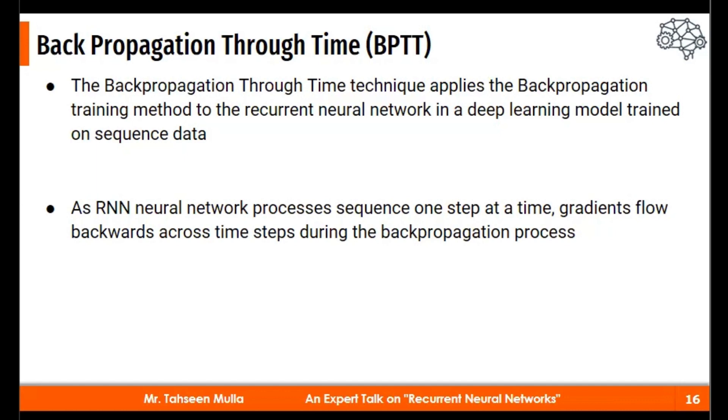The gradient at each input depends only on the calculations of the current step, not on the previous step. For example, if I want to calculate the gradient at time step t equal to four, I need to backpropagate three steps and sum up all those gradients and then calculate it for the current state.